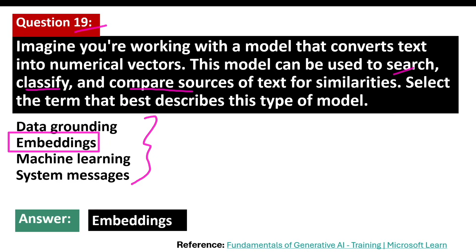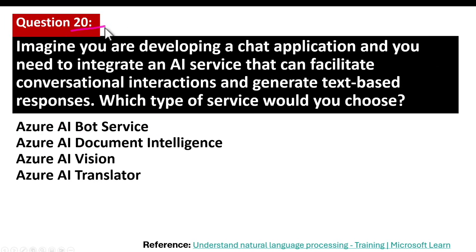Benefits of embeddings include enhanced search capabilities, improved classification, and similarity comparison. Use cases include search engines, content recommendation, and sentiment analysis. Google uses embeddings to understand the context and intent behind search queries, providing more accurate and relevant results. Netflix employs embeddings to analyze viewing habits and recommend shows and movies that users are likely to enjoy based on their past behavior.